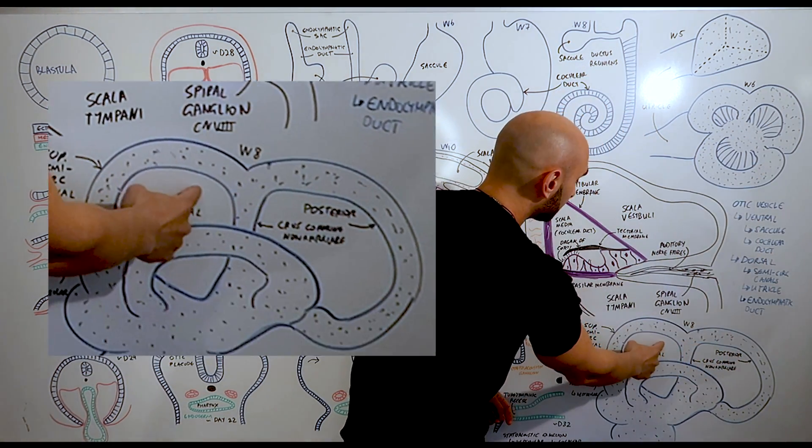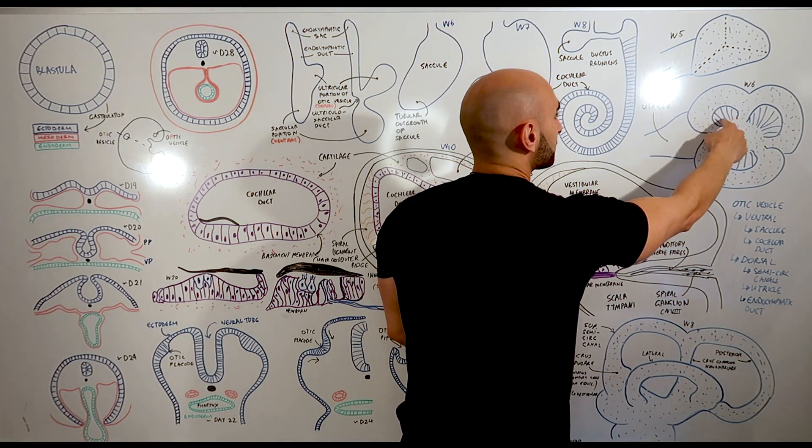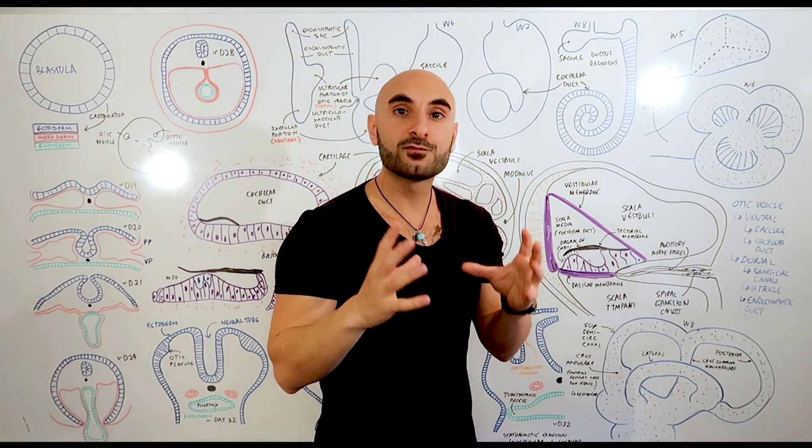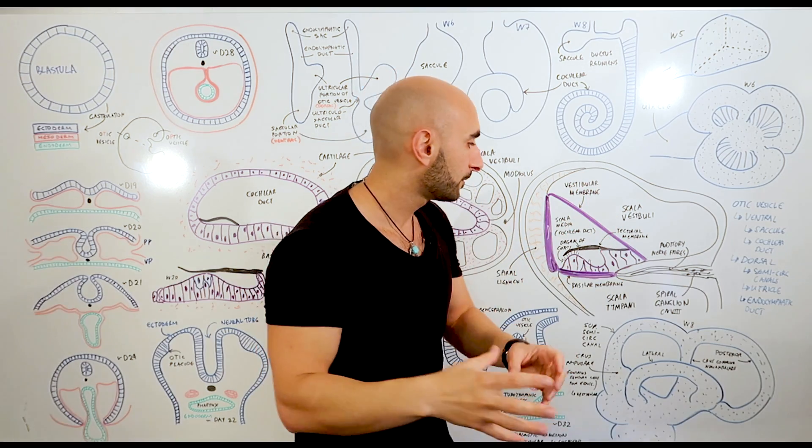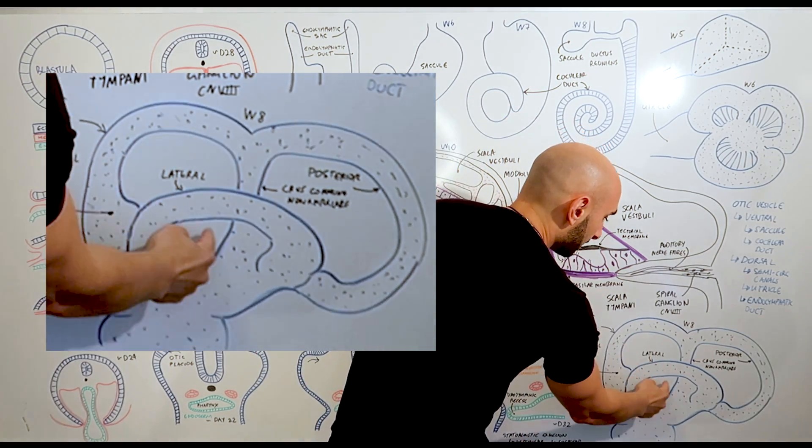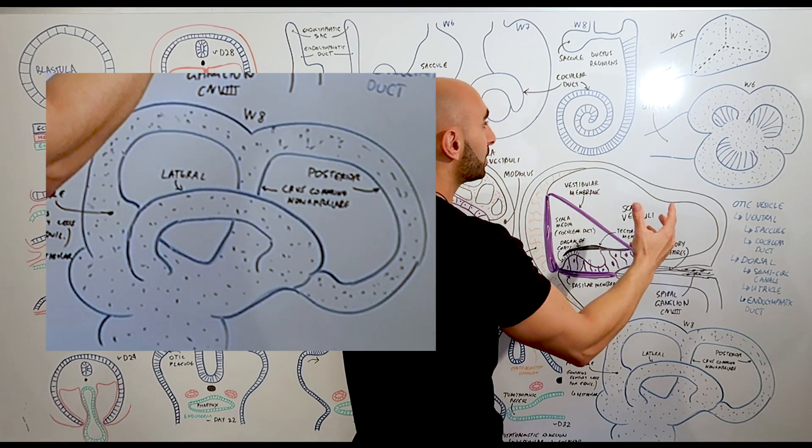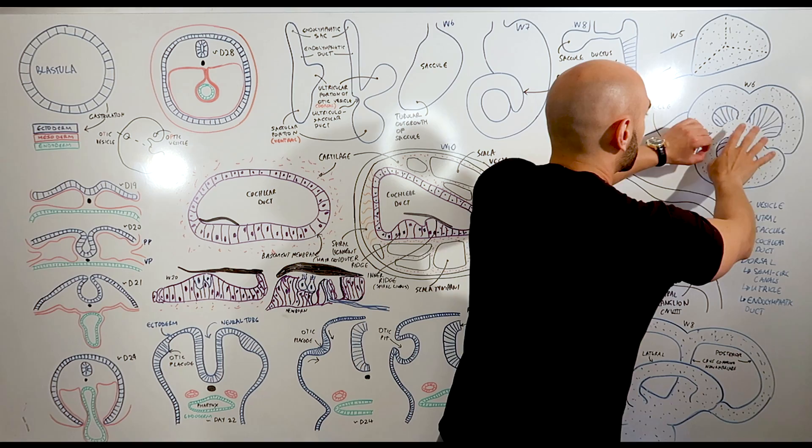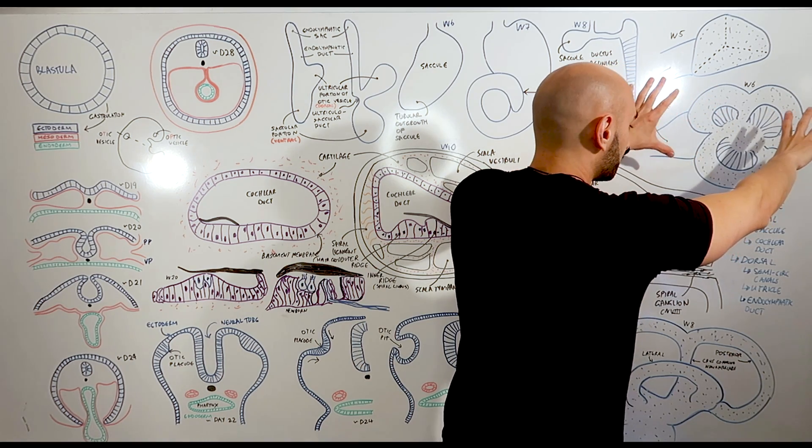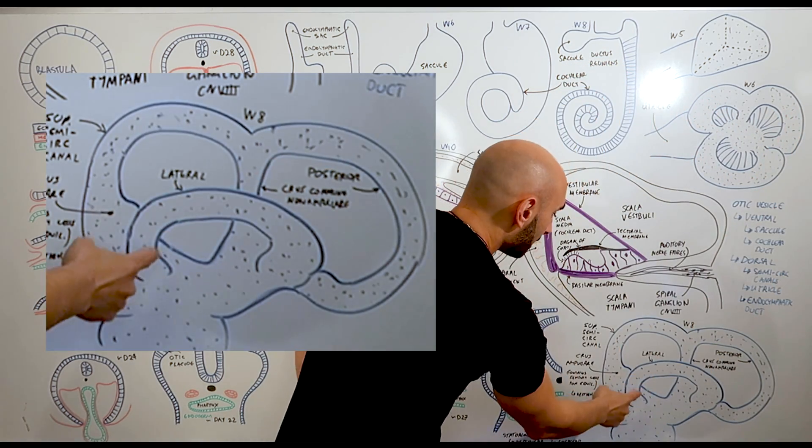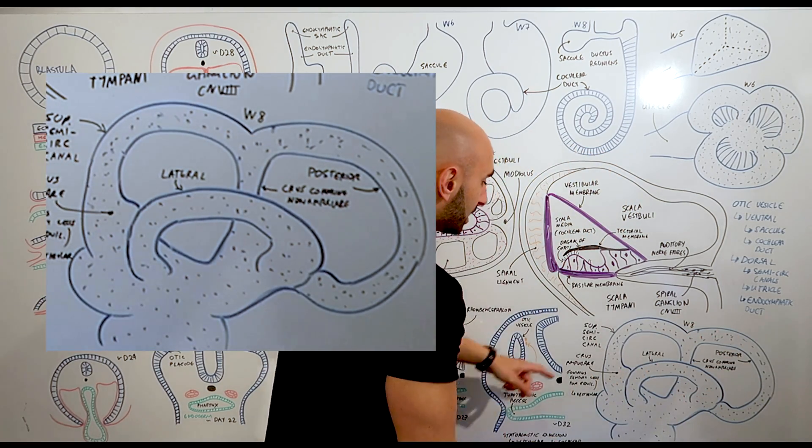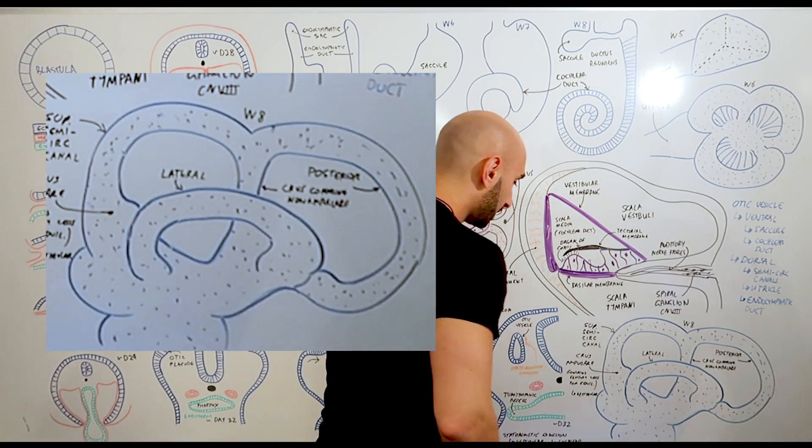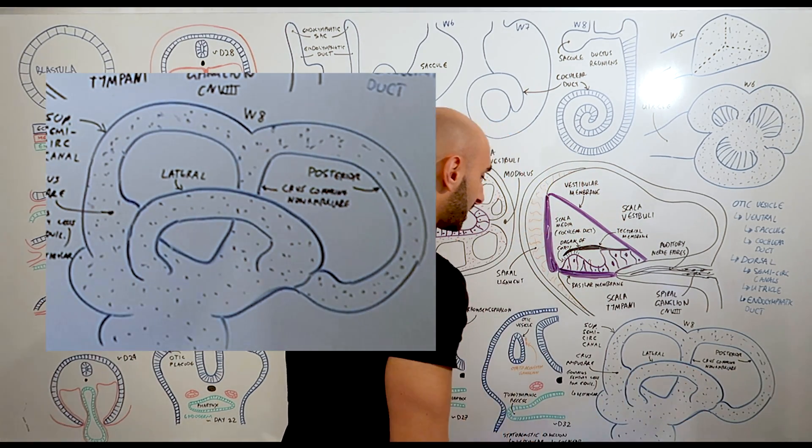And by week eight, these walls will vacuolize, which means the cells will die forming a pit or a hole right here. So essentially what you're left with is, from week five where you have just a wall of tissue and then three walls of tissue that are next to each other, you'll have three semicircular canals: the superior semicircular canal, posterior semicircular canal, and the lateral semicircular canal.